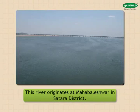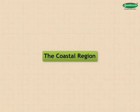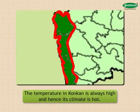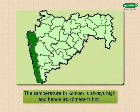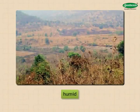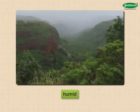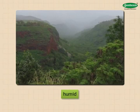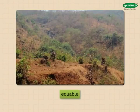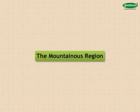The river Krishna further flows through Karnataka and Andhra Pradesh before flowing into the Bay of Bengal. Maharashtra climate — the coastal region: the temperature in Konkan is always high and hence its climate is hot. Due to nearness of the sea, the amount of moisture in the air is also high, making it humid. There is little difference in temperature throughout the day, and the temperature does not vary much during different seasons. Hence the climate is said to be equable — hot, humid, and equable.